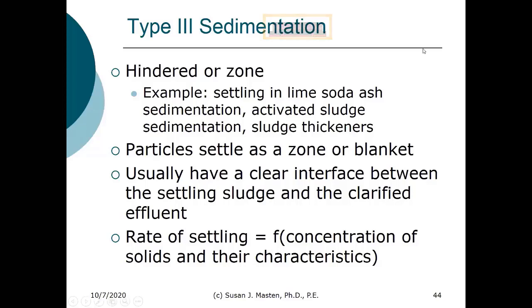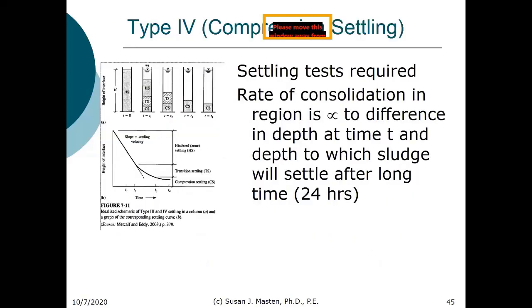And that interaction results in these particles settling at a faster rate or a different rate from what they would settle if you didn't have this interaction. So because of that, we have to do all of the testing experimentally with Type 3 and Type 4. Type 4 is what we call compression settling.